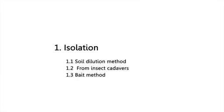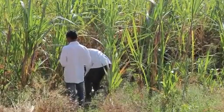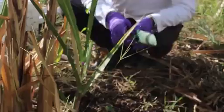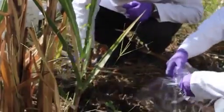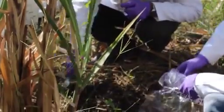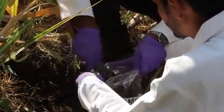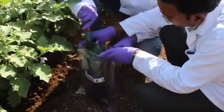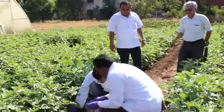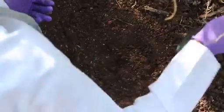Isolation of the insect pathogenic fungi can be done by three methods. The first is from soils. Metarhizium is a naturally occurring fungus in most soils. To get a wide variety of isolates, soils from fields with different kinds of crops and from widely separated regions are collected.